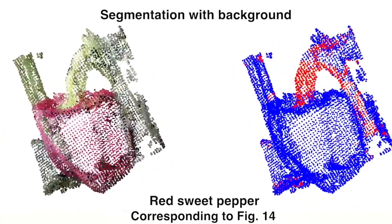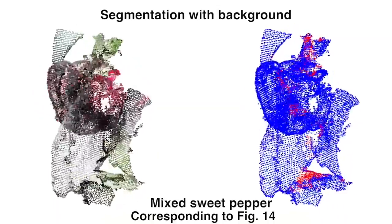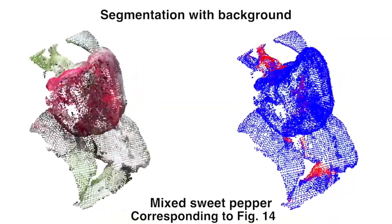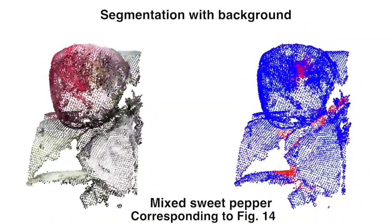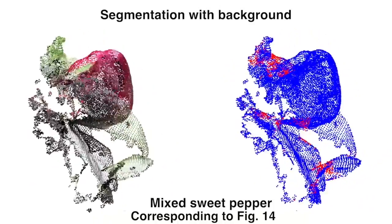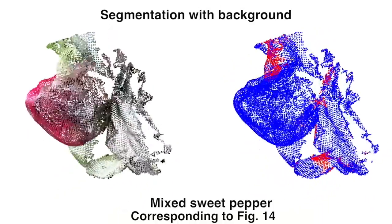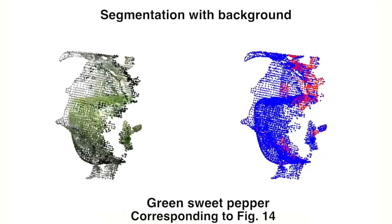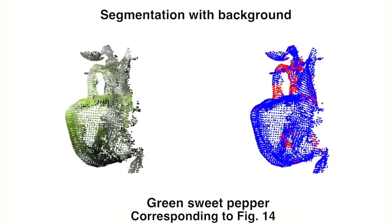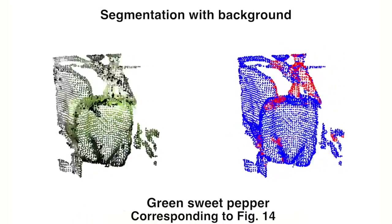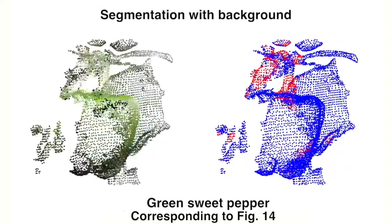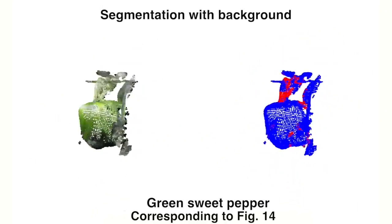To overcome this, we are working on making use of context features that take into account the relationship between a sweet pepper and its peduncle. The position of the peduncle is usually above the centroid of a sweet pepper, within a range of distances, and its orientation follows an anti-gravity vector. With this extra information, the supervised learning algorithm will likely be able to determine and improve the false positive rate.